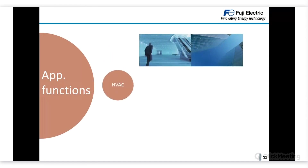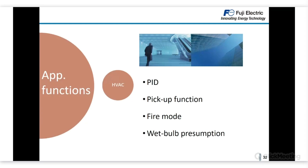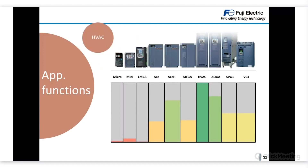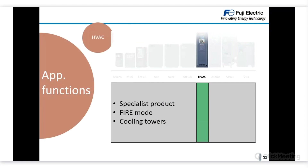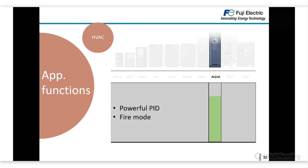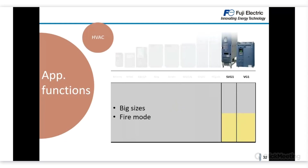For HVAC applications, a strong PID is often needed, along with a pickup or catch-spinning-motor function, especially for fan applications. Fire mode is also important, mainly for fans. There is also a specific feature called wet valve presumption control, an energy-saving feature for cooling towers that is only available in the HVAC inverter — our specialist product for this application. Aqua and AceH also have a strong PID and fire mode and can be used especially in multi-motor applications. VG1 and VG1 stack have fire mode but not PID, and are mainly used for large applications with very large motors and fans.